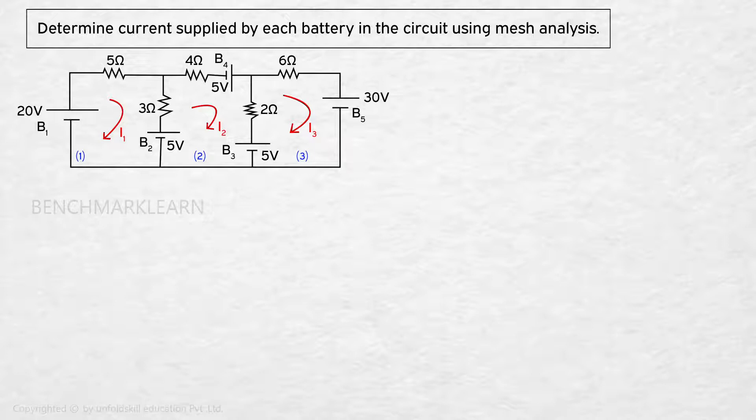We can now write the matrix equation for the circuit. Since there are three meshes, the resistor matrix will be a 3 by 3 matrix.